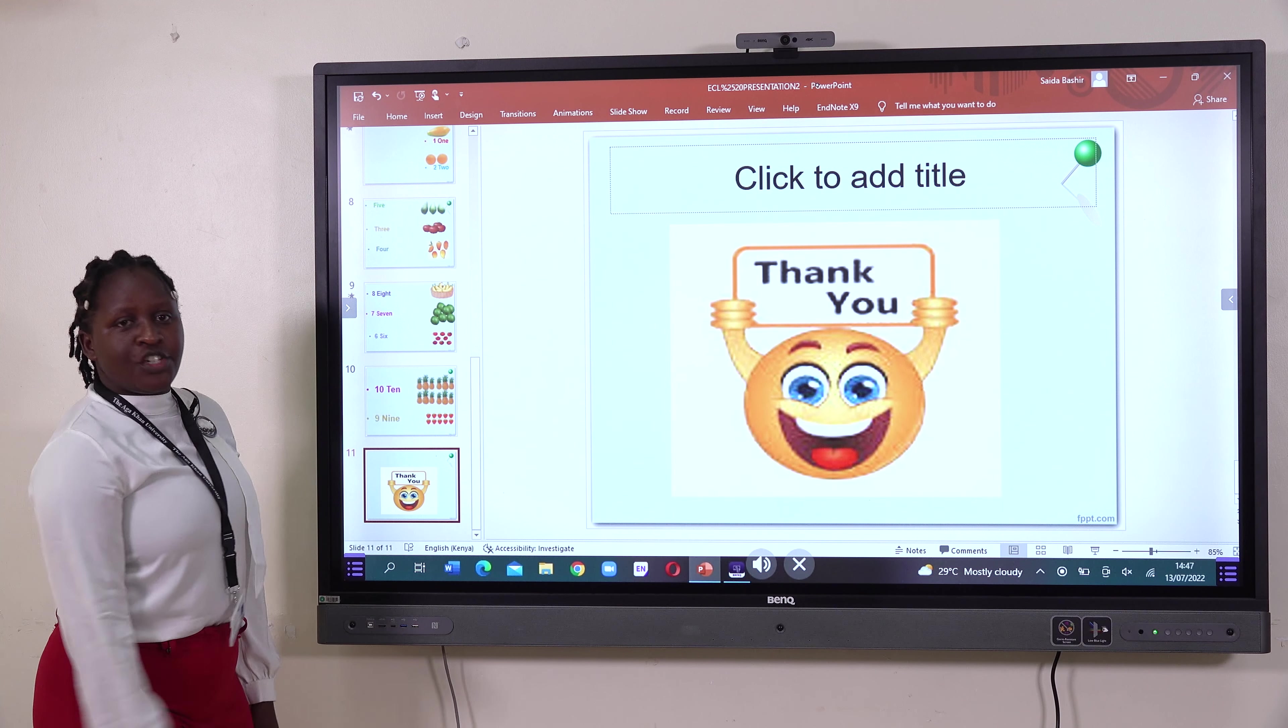And if I want to show where number two is, I'm going to click here and drag it and drop it under number two. So learners, I'm expecting you in the next slide to arrange. You find number three from here and then you do the dragging up to there, then you do the same activity until you finish. Thank you so much.